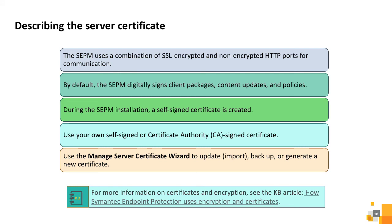The Symantec Endpoint Protection Manager supports the following types of certificates: JKS Keystore; PKCS12 Keystore, where the Keystore password must be the same as the key password and is usually exported from Internet Information Services; and certificate and private key files in DER and PEM format. Symantec supports unencrypted certificates and private keys in DER or PEM format. PKCS8 encrypted private key files are not supported. Use the Management Server Certificate Wizard to update, backup, or generate a new certificate. For more information on certificates and encryption, see the KB article noted.